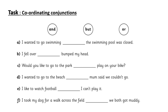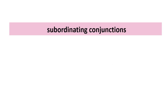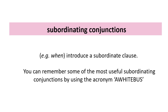'Would you like to go to the park or play on your bike?' The word there is 'or' — it gives an option, so when there's a choice it's usually 'or'. 'I want to go to the beach but mum said we couldn't go.' And 'I like to watch football but I can't play it' — that gives the opposite. 'I took my dog for a walk across the field and we both got muddy.'